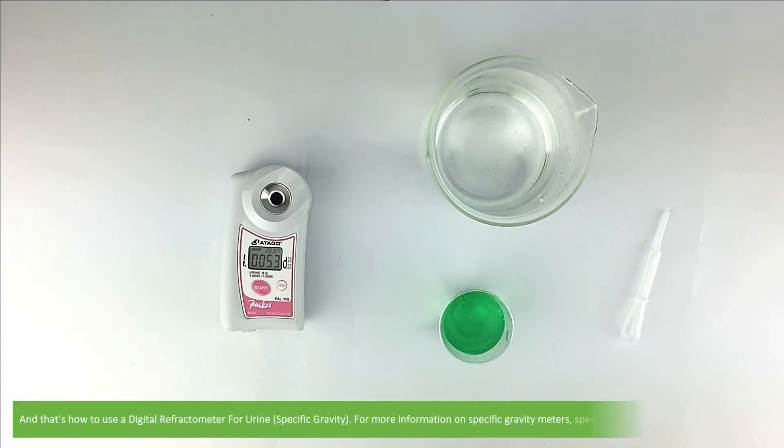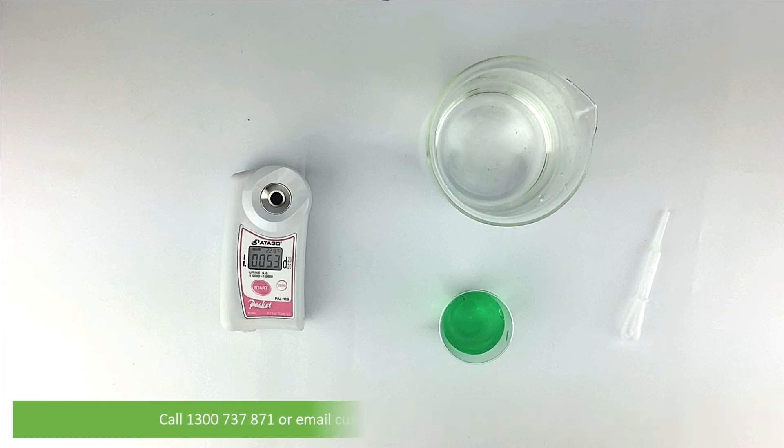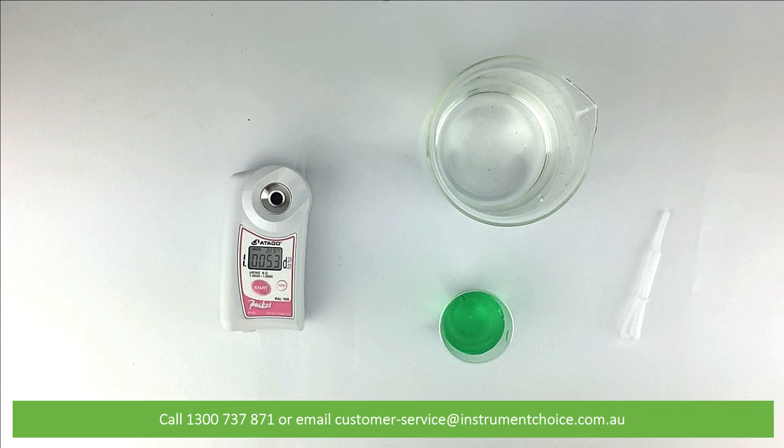And that's how simple it is to use a digital refractometer for urine specific gravity. For more information on specific gravity meters, speak with an Instrument Choice scientist. Call 1300 737 871 or email customer-service at instrumentchoice.com.au. We hope that you found this video helpful. Thanks for watching.